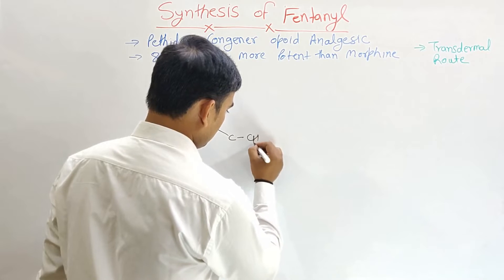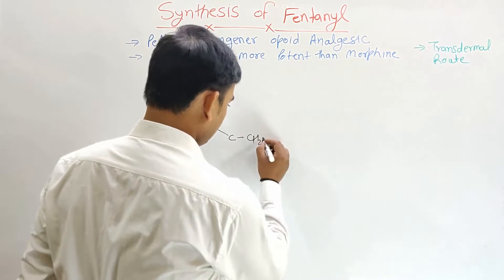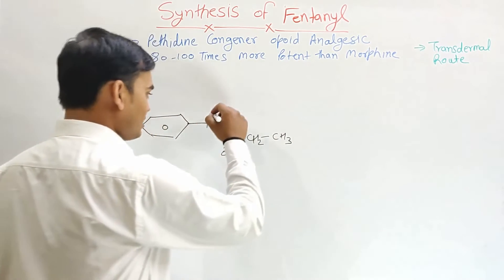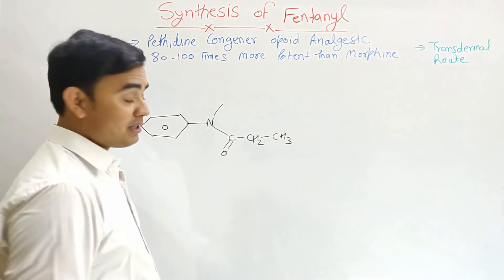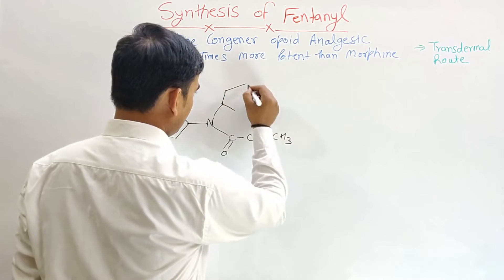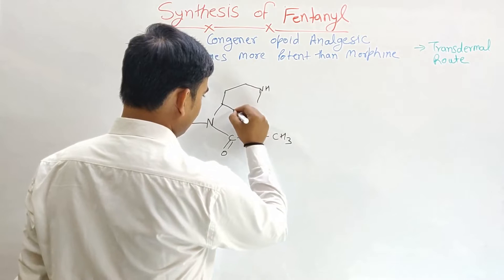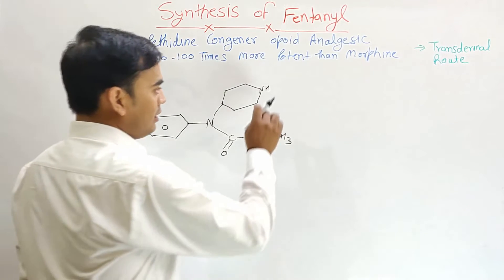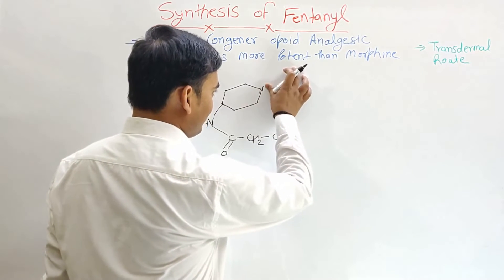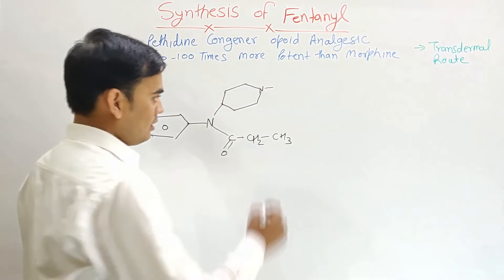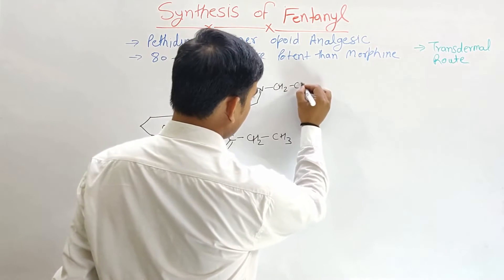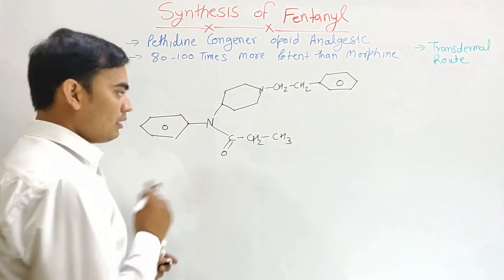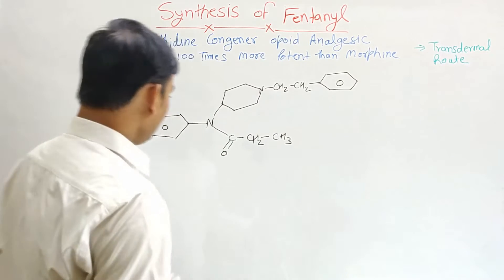This is the propionyl group attached to this nitrogen. A piperidine group is also attached — piperidine is a six-membered ring that has a nitrogen in its structure. This is the piperidine, and this piperidine nitrogen has a phenylethyl substitution: CH₂–CH₂–phenyl. This is the basic structure of fentanyl.